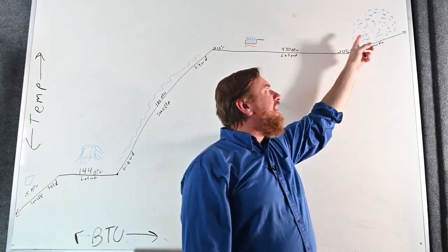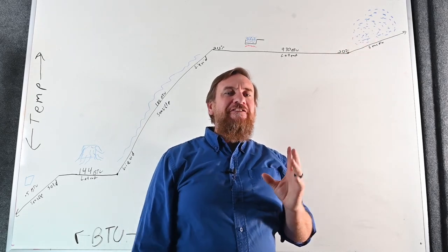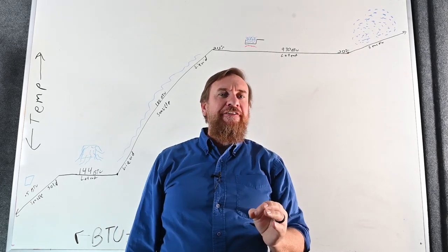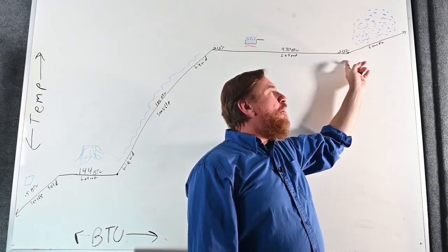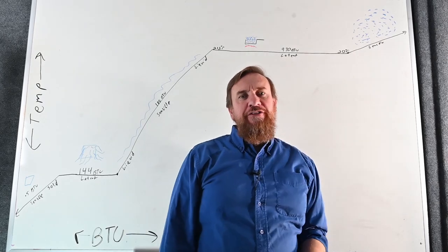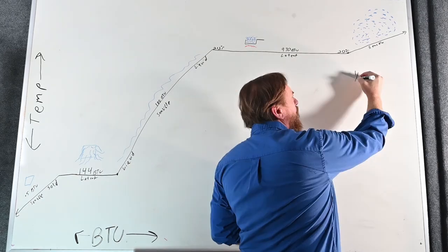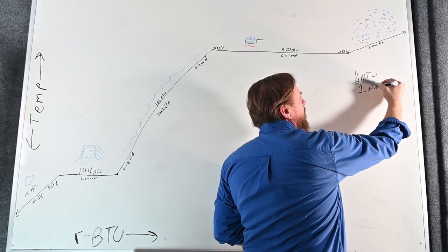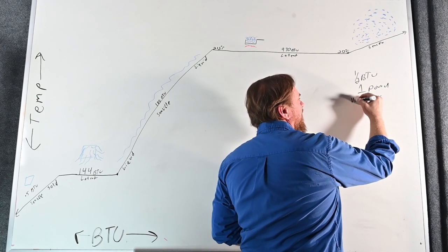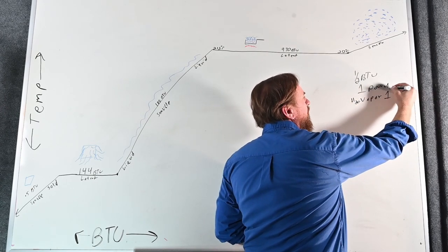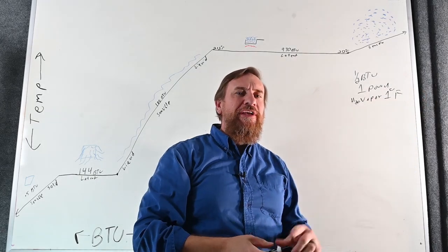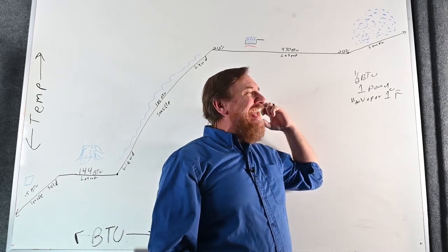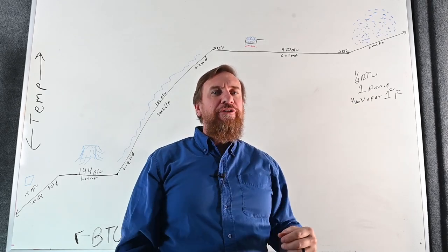The catch is, once we're over here in vapor, even if we have one pound of H₂O vapor, it's only going to take half a BTU to change one pound of vapor one degree Fahrenheit. One of the reasons for that is because the densities change — those molecules are much farther apart, so it only takes half a BTU to change it one degree Fahrenheit.